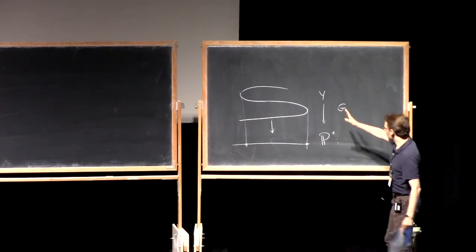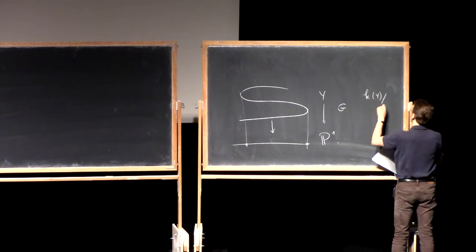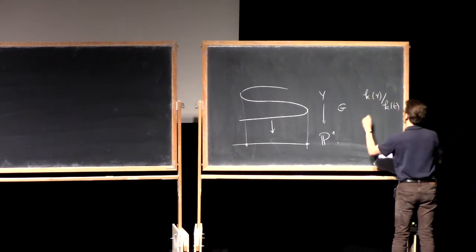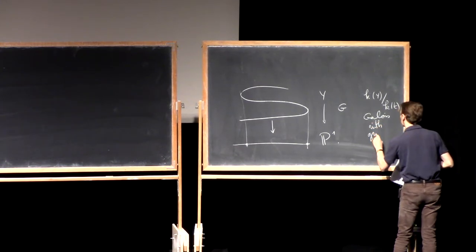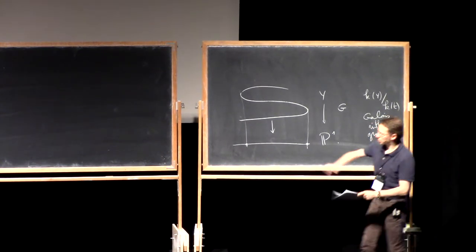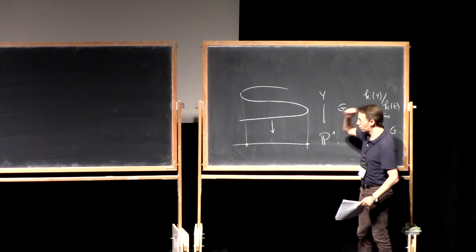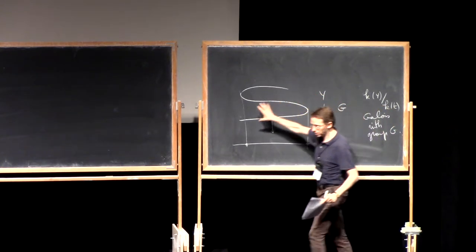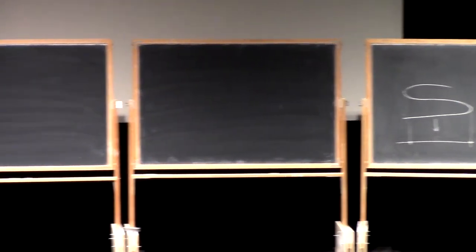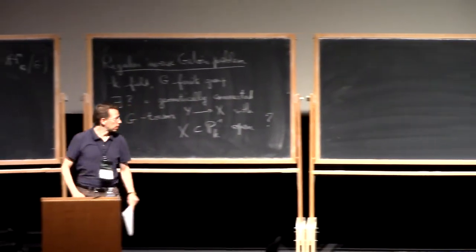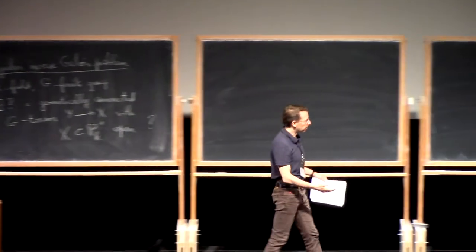In particular, the extension of function fields is Galois with group G. Geometrically connected means: not only is it a connected curve, but even if you extend the scalars from K to an algebraic closure, it remains connected. If you can do this and K is ℚ, then you apply Hilbert's irreducibility theorem and immediately solve the inverse Galois problem for G over ℚ.